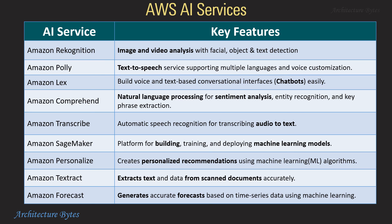Amazon SageMaker is a platform for building, training, and deploying machine learning models. Amazon Personalize creates personalized recommendations using ML algorithms. Textract extracts text and data from scanned documents. Amazon Forecast generates accurate forecasts based on time series data using machine learning.